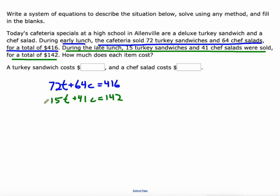So this one's a lot tougher because I can't just subtract the second equation from the first. I need to get some kind of common multiple. So here's what I'm going to do. I'm going to take this top equation and let's multiply it by negative 15. All right. So 72 times negative 15 is negative 1080T. And 64 times negative 15 is negative 960. So negative 960C and 416 times negative 15 is negative 6,240.